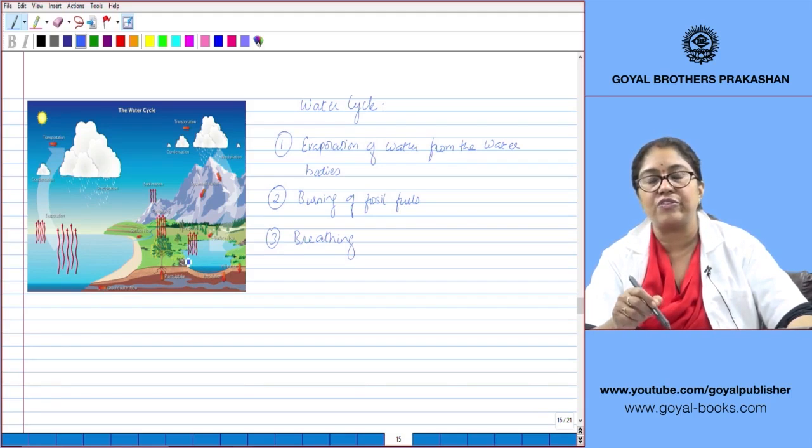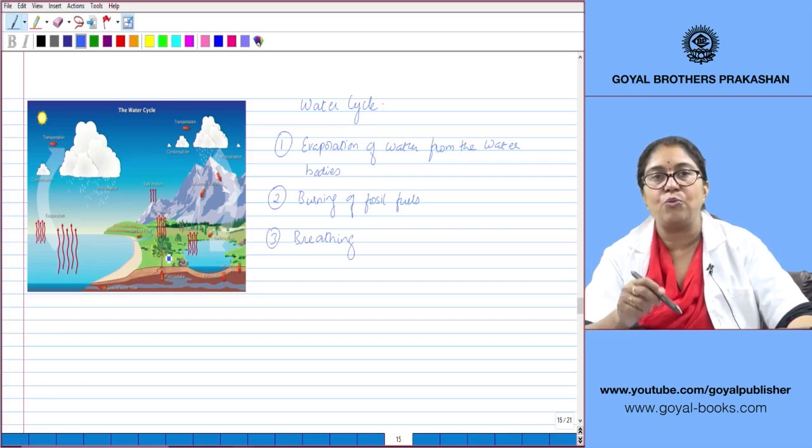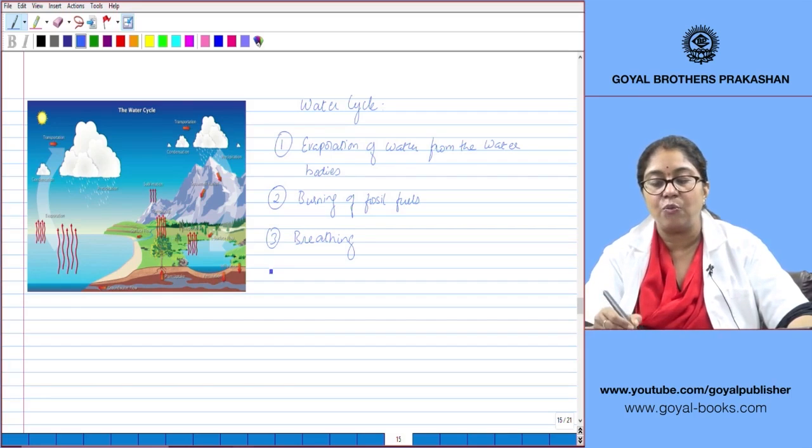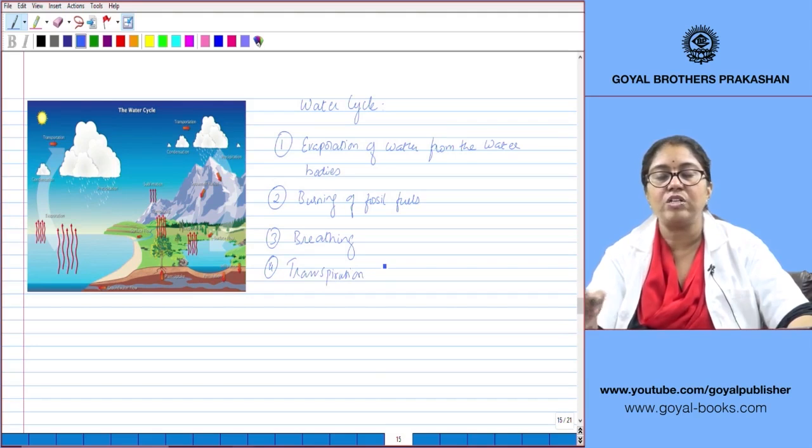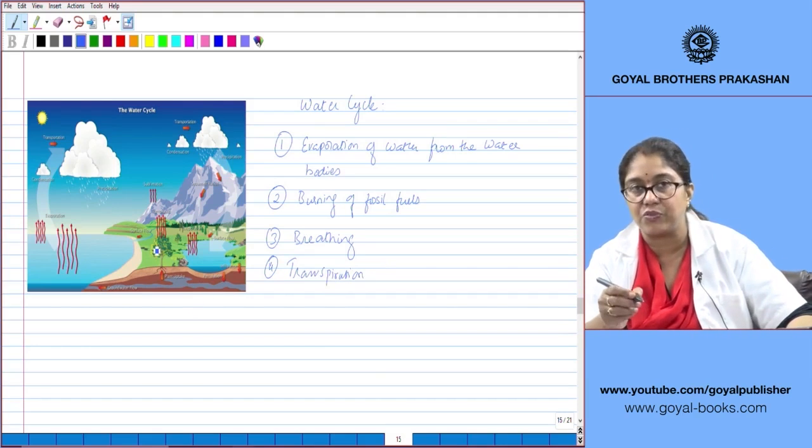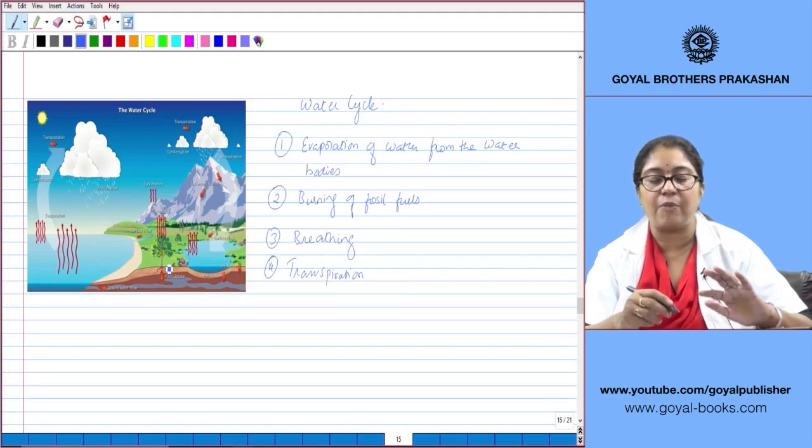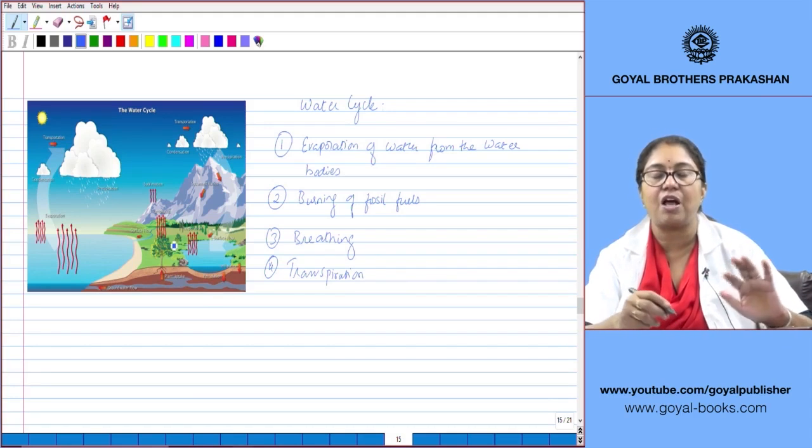Or this rain water seeps down through the porous surface of the earth and forms underground water, from where it is taken up by plants. The water taken up by plants is again given out by transpiration, which is the fourth method by which water vapor is given out into the atmosphere.